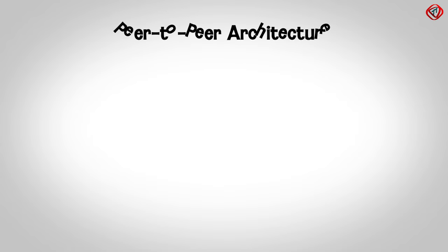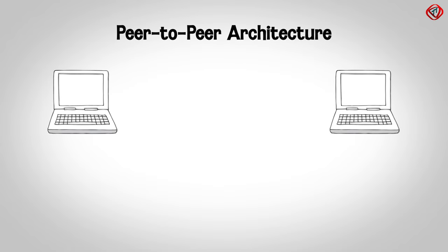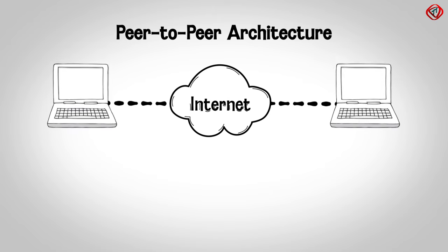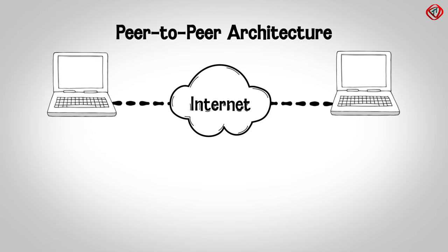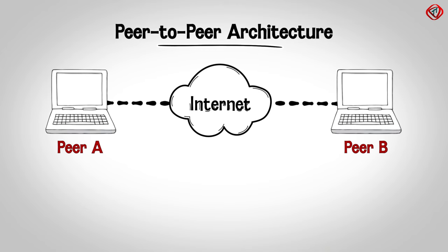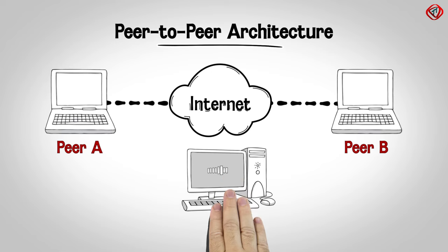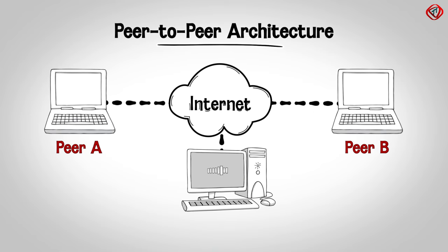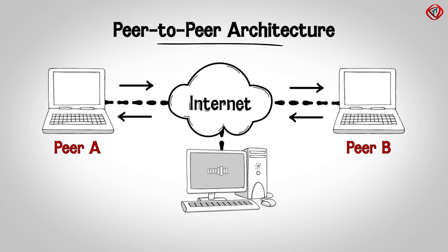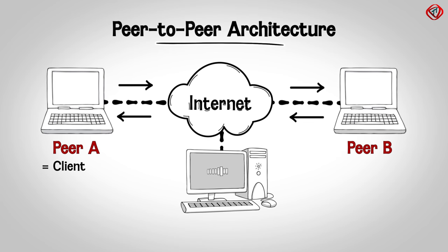In P2P architecture, end systems communicate directly with each other without any dedicated server. The two communicating end systems in P2P architecture are called peers, hence the architecture is called peer-to-peer. Peers can be laptops, desktops, smartphones, etc. Suppose peer-A initiates a request for a file and peer-B shares the file with peer-A. In this case, peer-A is the client and peer-B is the server.